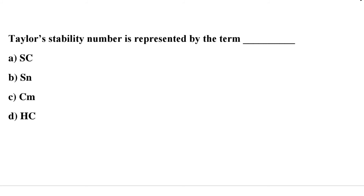Next question: Taylor's stability number is represented by the term — Option A: Sc, Option B: Sn, Option C: Cm, Option D: Hc. The correct answer is Option B, Sn.